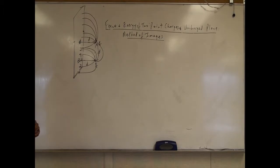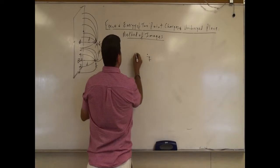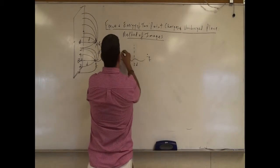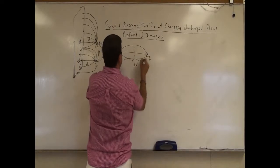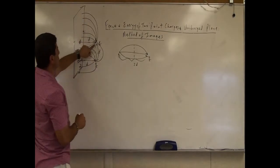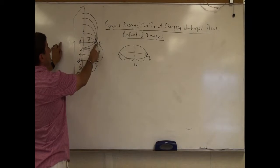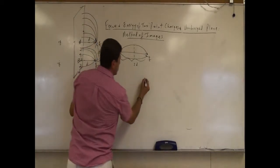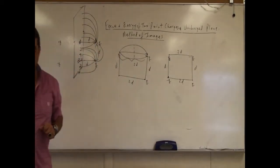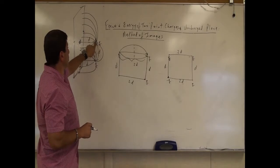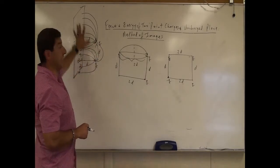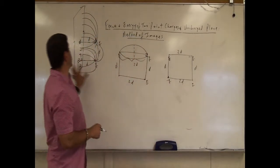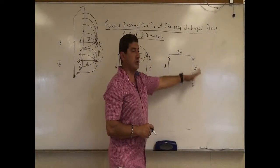So how can we mimic this with the method of images? We place a negative Q image charge on the opposite side of the plane, at distance 2d from Q. Then behind the plane, opposite to the negative Q, we place a positive Q image charge. And behind the other side we place another negative Q image charge. This creates an electric field that is horizontal in the middle, just like it is at the plane surface.